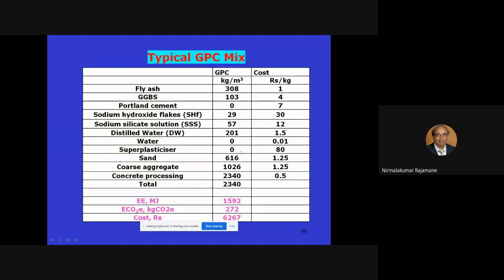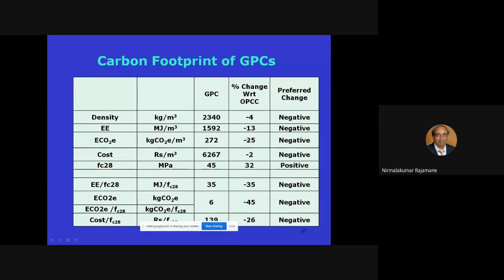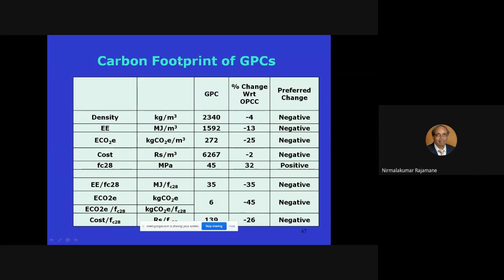With superplasticizer, sand, and coarse aggregate included, I have calculated the embodied energy in MJ and the embodied CO₂ emission in kg CO₂ per kg of material, and also the cost. Comparing with an OPC concrete of similar nature, the geopolymer concrete showed lower density, less embodied energy, less CO₂ emission, similar or lower cost — and equal or higher strength.